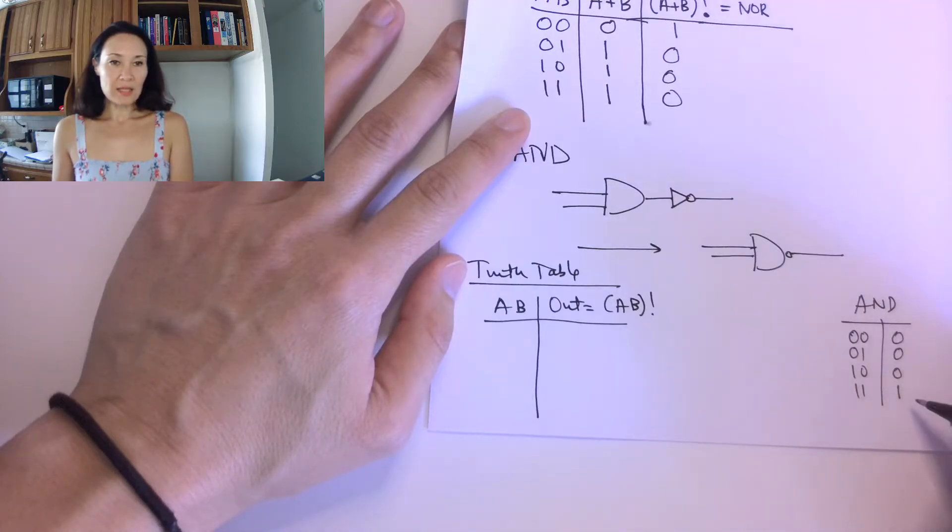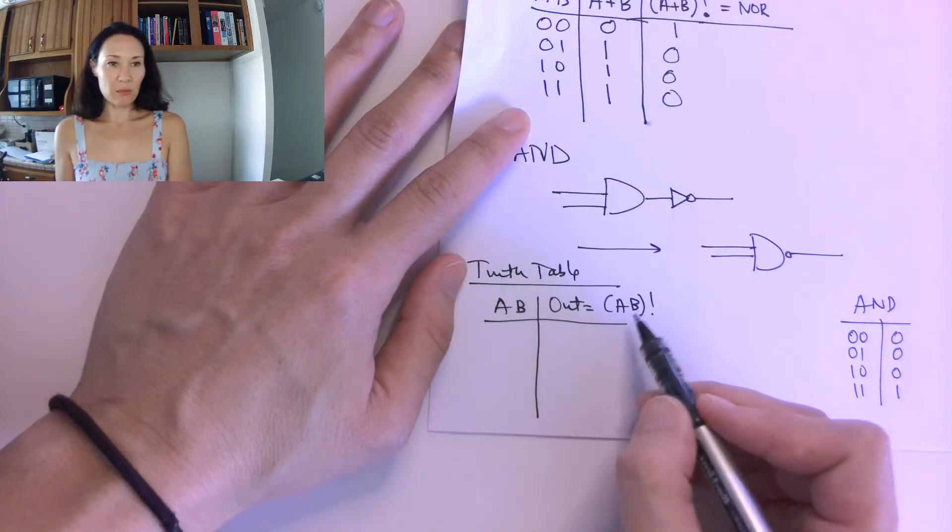If we take this AND truth table and we basically invert all of the bits of the output, that's going to give us A and B naught. In other words, NAND.